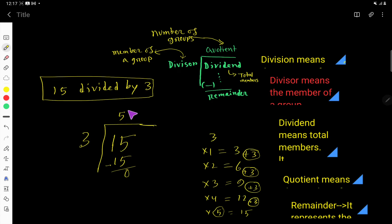So if you subtract, then you will get 0. So this is the result. The answer is 5. Look, here you can make 5 groups, and the number of each group, the member of each group is 3.